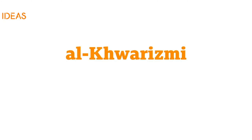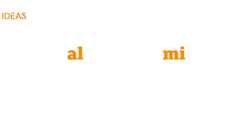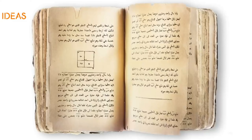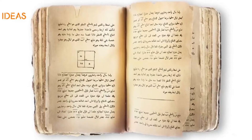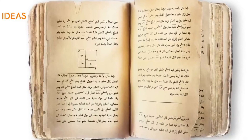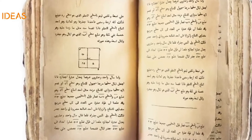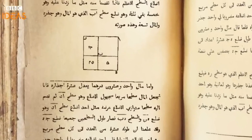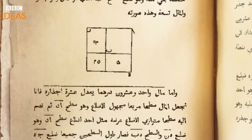Al-Khawarizmi's name, when Latinised in the title of the book, became Algoritmi, and this is the origin of the word algorithm. We also have al-Khawarizmi to thank for the word algebra, which comes from another of his works.